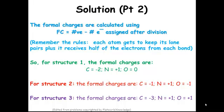So for structure one, the formal charges are: carbon is minus two, nitrogen is plus one, oxygen is zero. In structure two, the formal charges are: carbon is minus one, nitrogen is plus one, oxygen is minus one.